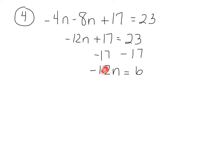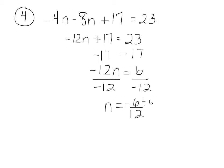This is a negative 12 times n, not a minus 12. To get rid of times negative 12, divide both sides by negative 12. 6 divided by negative 12 is negative 6 twelfths. Simplify by dividing by 6: negative 6 twelfths becomes negative 1 half. Negative 1 half or negative 0.5 is an acceptable answer.